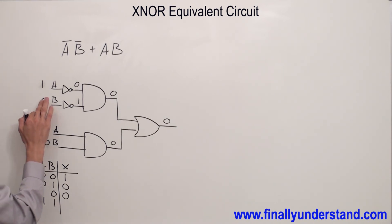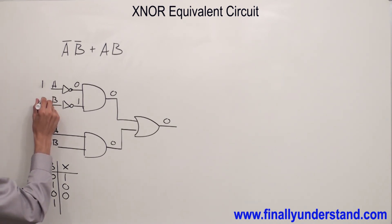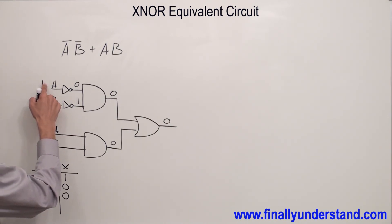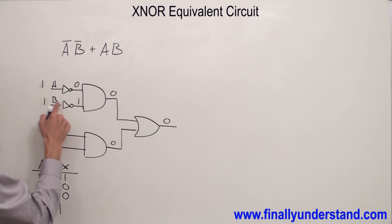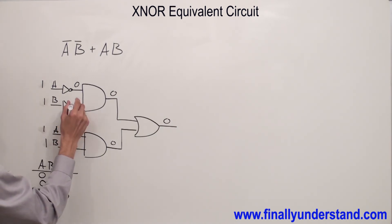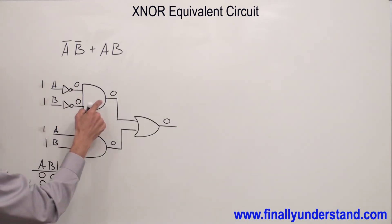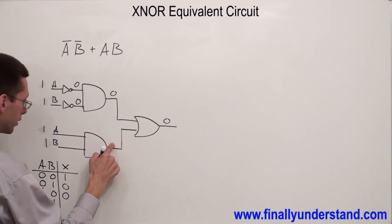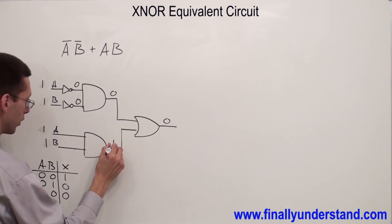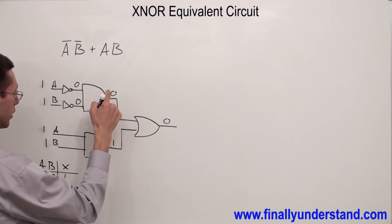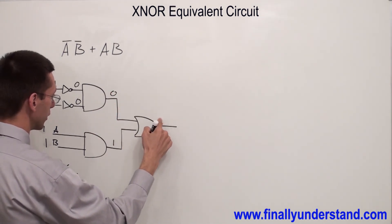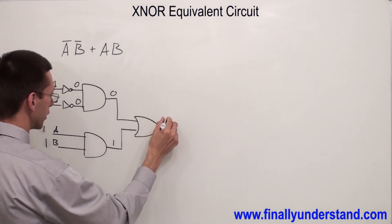Now I have to apply highs to both inputs A and B. 1 is going to give me 0, and 1 is going to give me 0. 0 AND 0 gives me 0. 1 AND 1 gives me 1. 0 OR 1 gives me 1.